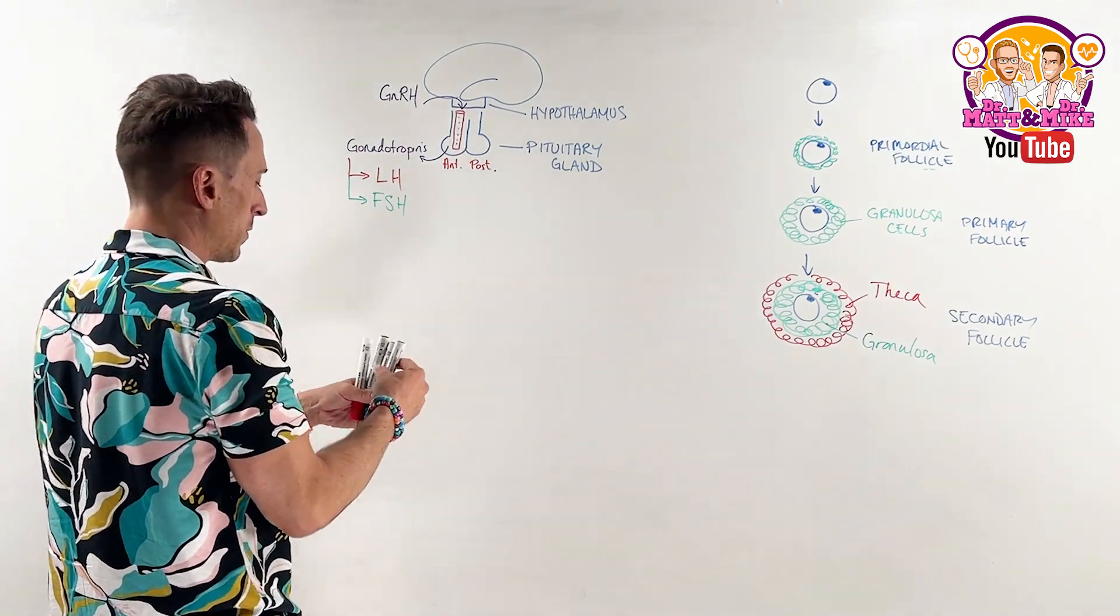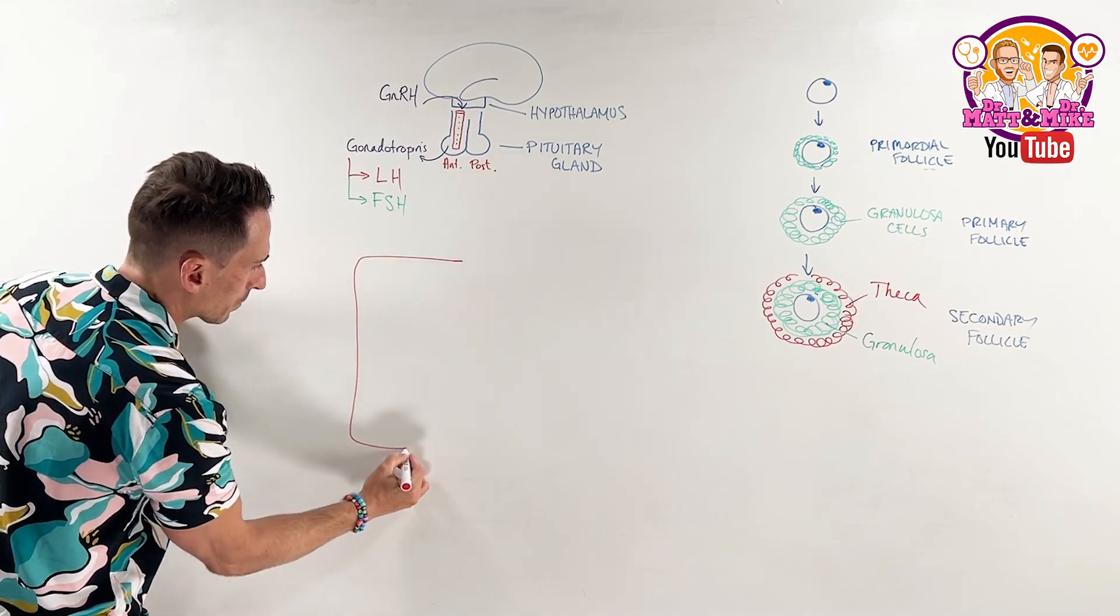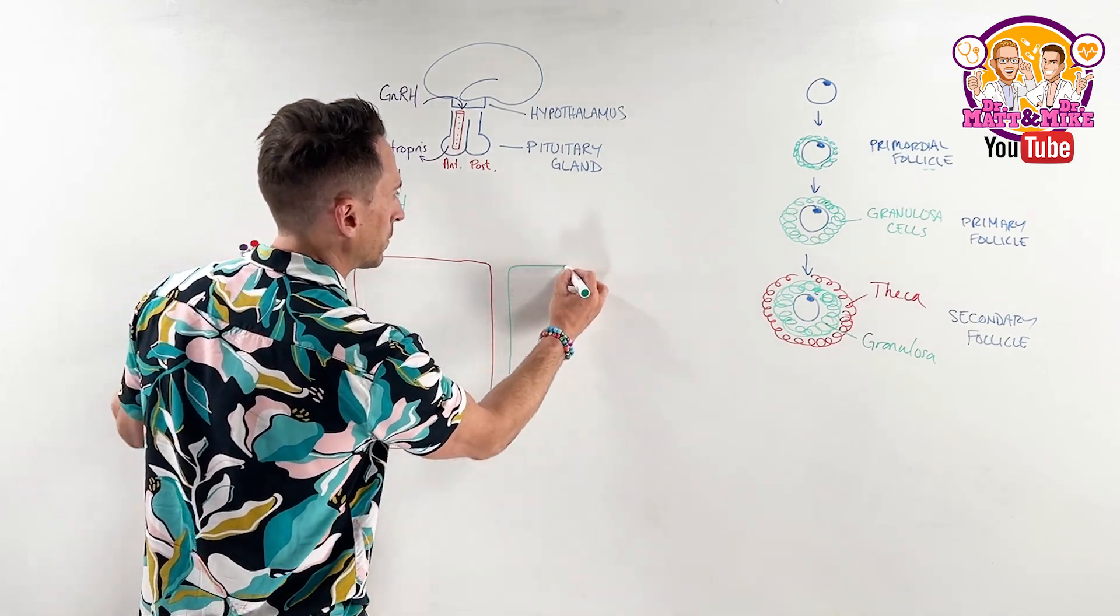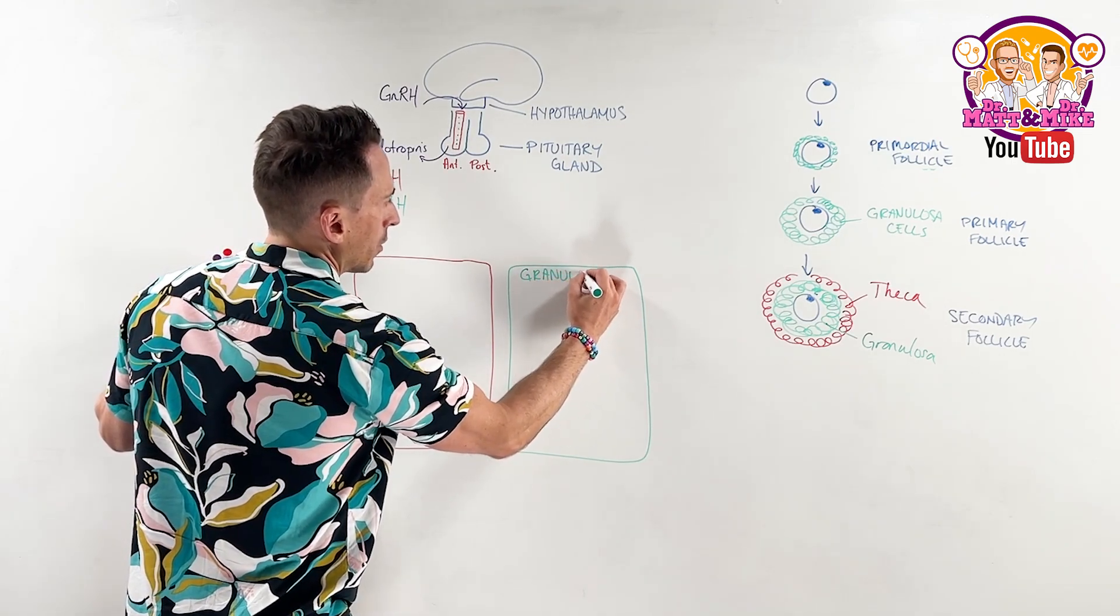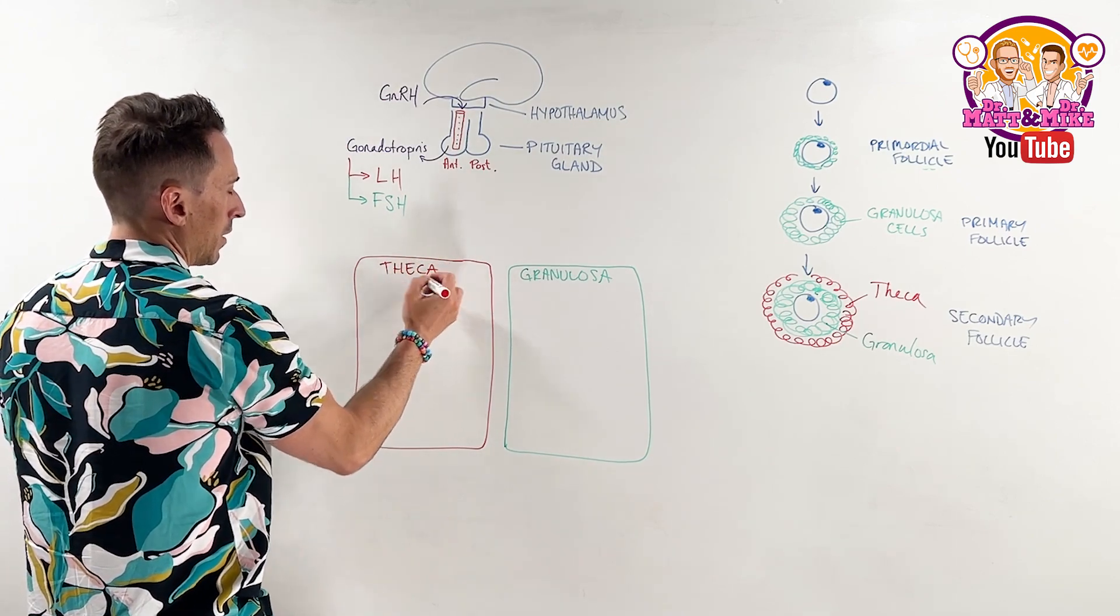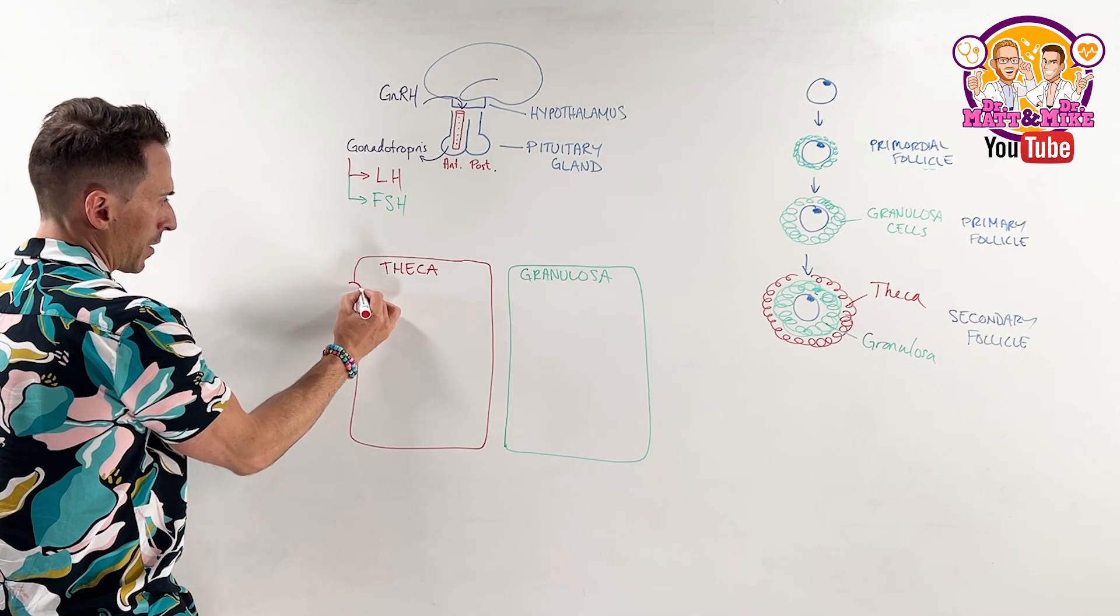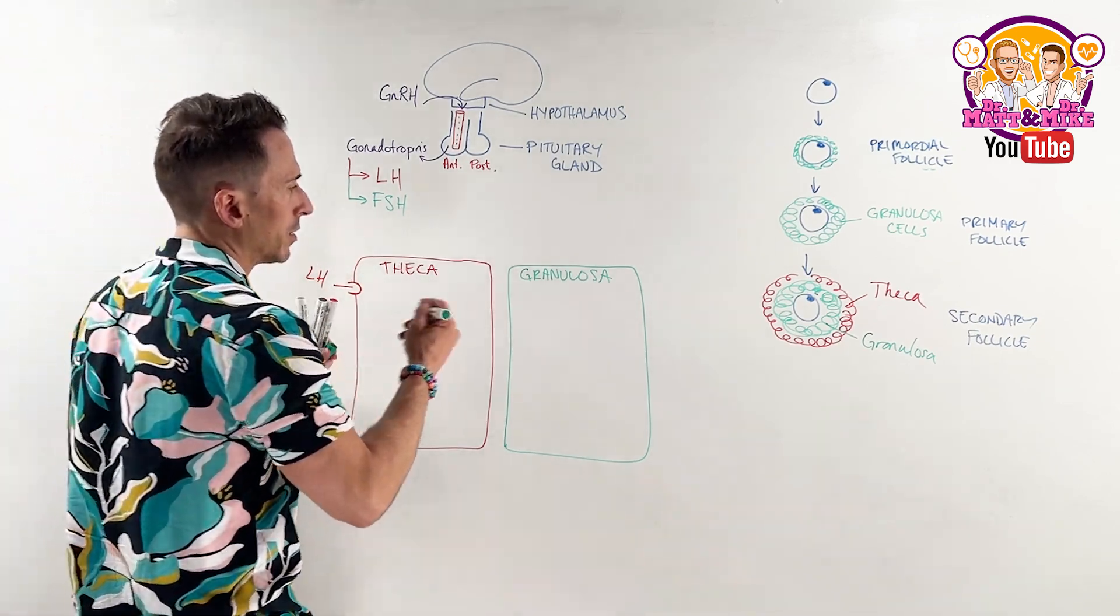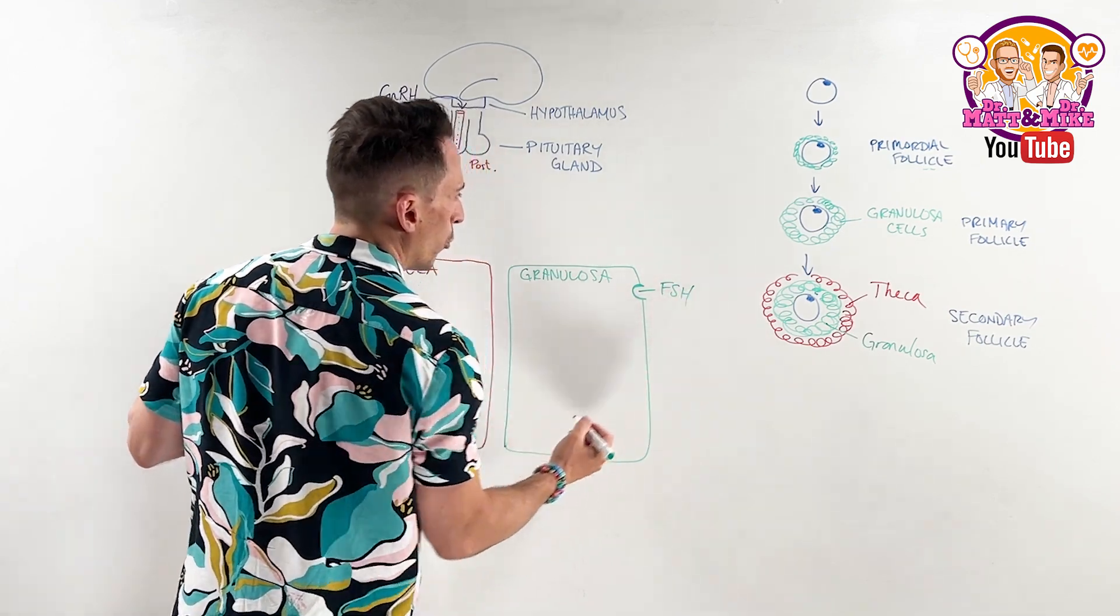We've now released luteinizing hormone and follicle stimulating hormone. If I were to draw up a theca cell here and I were to draw up a granulosa cell here and let's label it, granulosa, theca, it's important to know that theca cells have luteinizing hormone receptors. And that granulosa cells, what do you think they have? They have follicle stimulating hormone receptors.